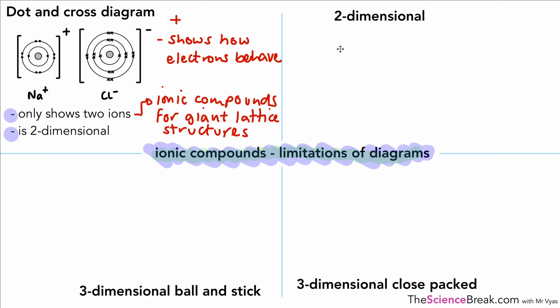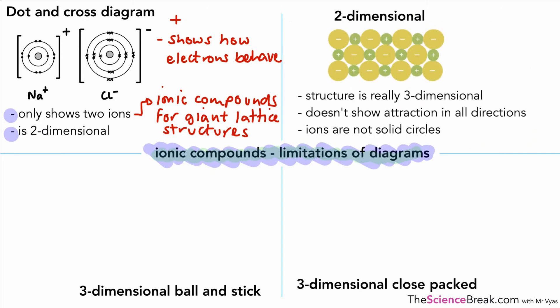We can actually do a better two-dimensional diagram that looks a bit like this. We've seen this a couple of times before. The good thing about this diagram is that it shows how the ions are arranged in the compound.